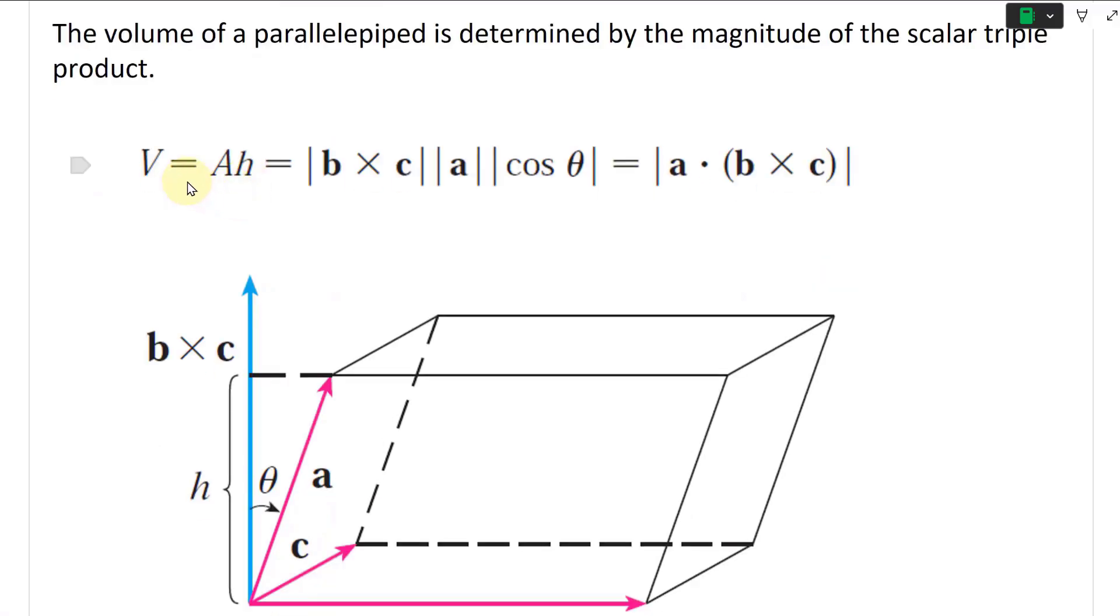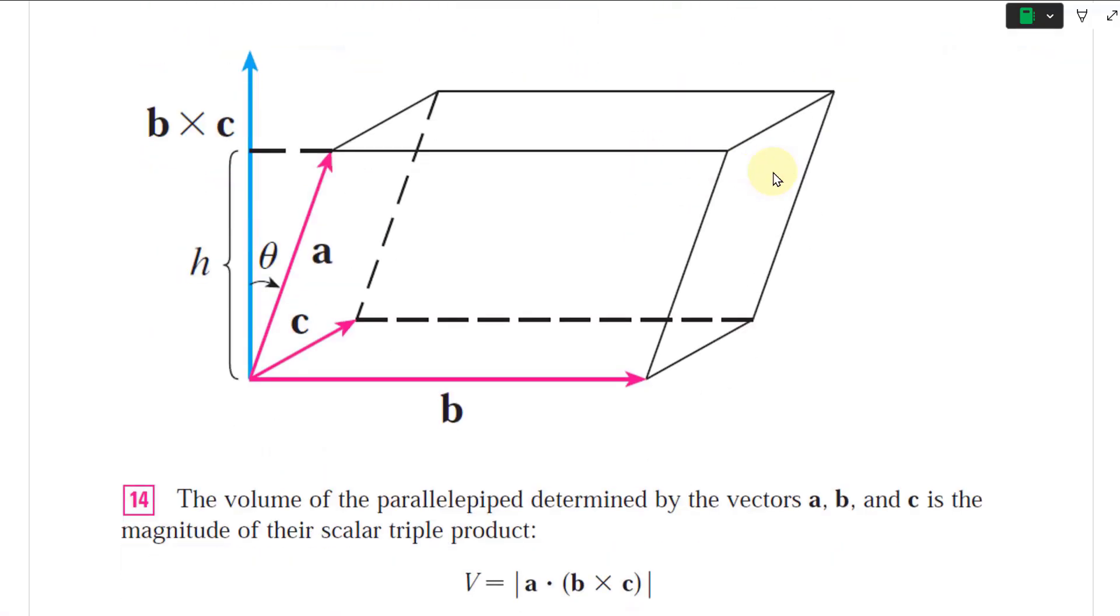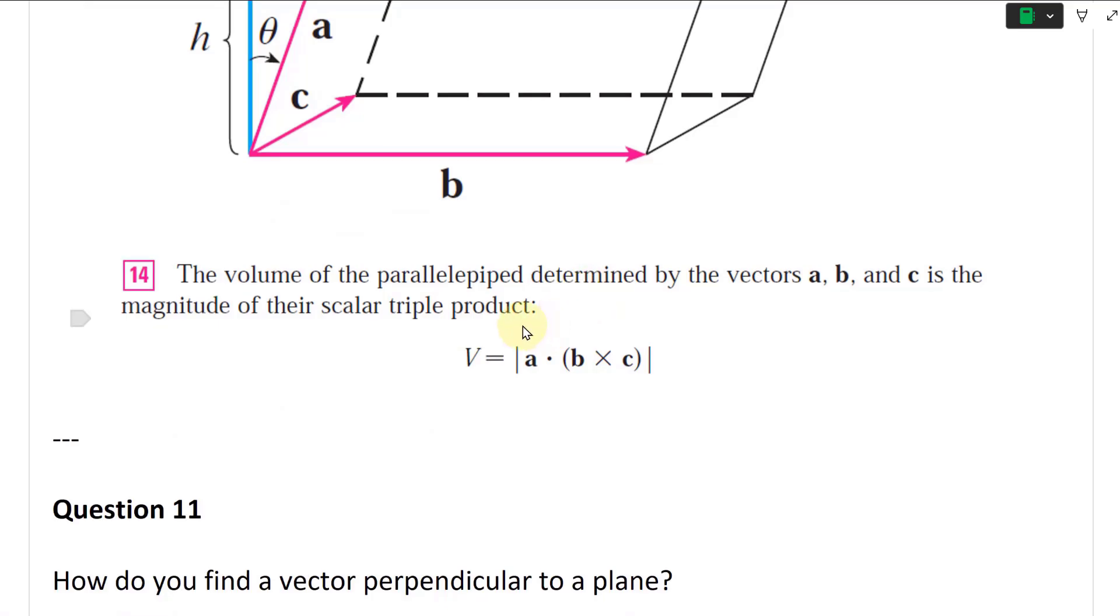So there's the one we already covered. So V equals area of the parallelogram times height H, which equals the length of the cross product B cross C, times length of A times the absolute value of cosine theta. And you get this scalar triple product. And it's going to be the absolute value or the length of the dot product with the cross product.